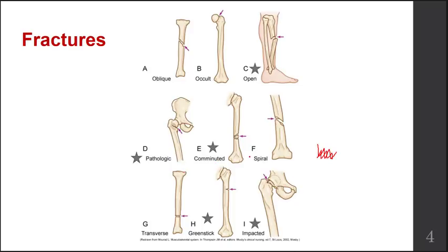We talked about how you can have an open fracture or a closed fracture. You can also have a complete fracture or an incomplete fracture. A complete fracture is when the bone is broken all the way through. An incomplete fracture is where the bone is damaged but still in one piece, such as the greenstick fracture example.